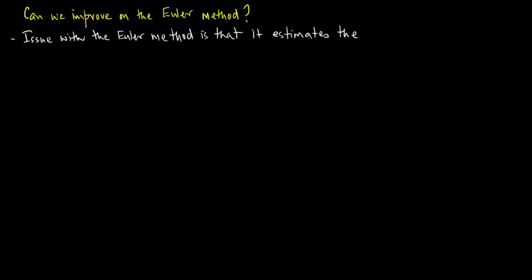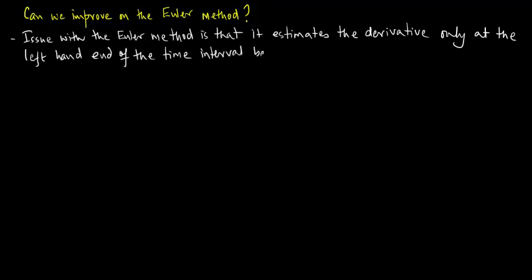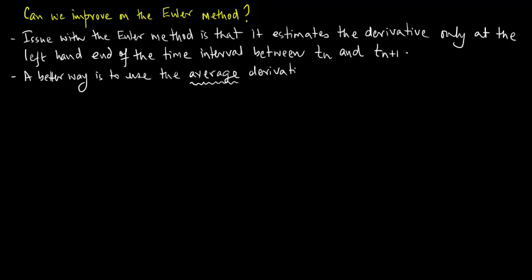It's natural to ask if we can improve on the Euler method. The issue with the Euler method is that it estimates the derivative only at the left hand end of the time interval between tn and tn plus 1. A better way is to use the average derivative across the time interval.